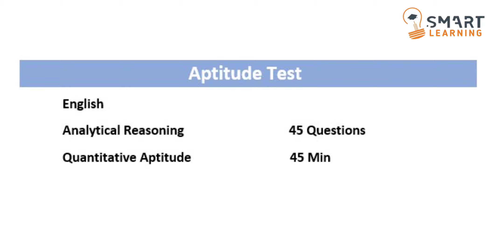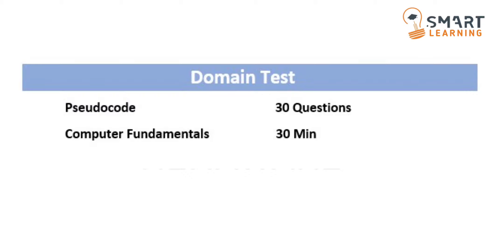The second round is the domain test. It consists of two subsections: the first one is pseudocode and the second one is computer fundamentals. In this second round, the total number of questions is 30 and the time duration is also 30 minutes — it may be 15 questions for pseudocode and 15 questions for computer fundamentals.